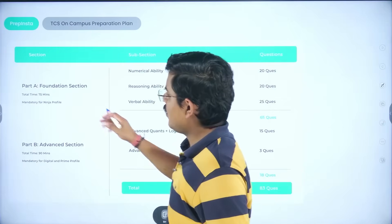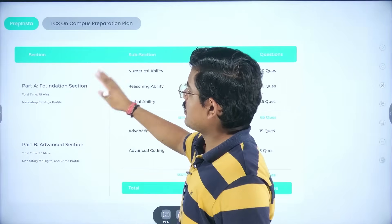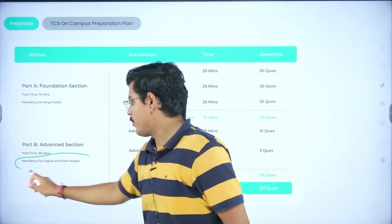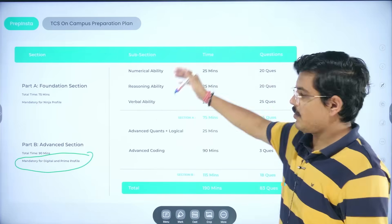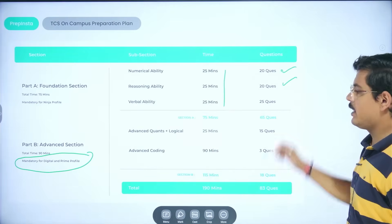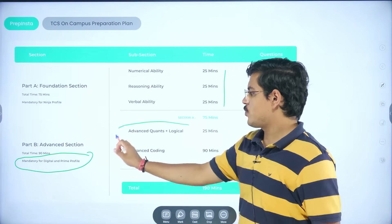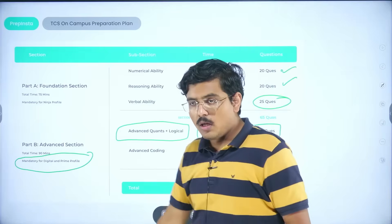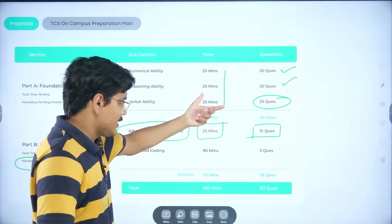In the online test, you have a foundation section and then post this foundation section, you have an advanced section. For foundation section, 75 minutes is the total time and this is mandatory for ninja profile. If you perform good in advanced section, then you'll be shortlisted for digital and prime profile and this is mandatory for it. Total time is 90 minutes in advanced section. The major portion lies here because it is not this particular test that is going to get you the bigger profiles. It is this particular portion.